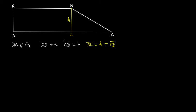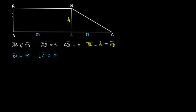Now, if we take line segment DL, the length of this line segment, let's call it M. And LC — the length of this line segment LC — is N. So to summarize: AB is A, CD is B, height BL is H, therefore AD is also H, and we have taken DL as M and LC as N.